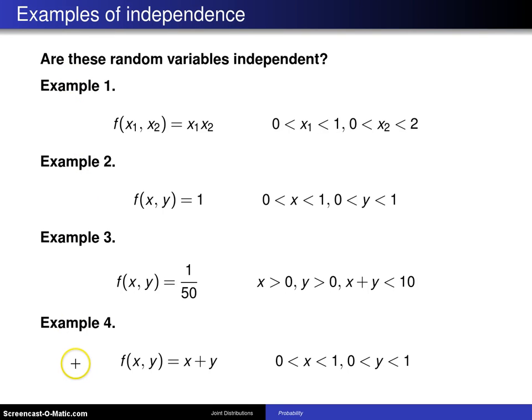Here are four examples, each asking: are these random variables independent? This could be done by finding marginal distributions and seeing if they multiply to the joint distribution, but instead we'll use the result from the previous page and ask two questions.